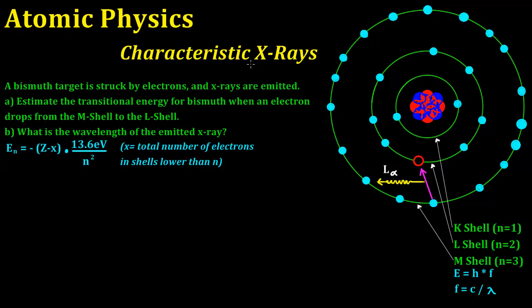Hi guys, today we're talking about atomic physics and characteristic x-rays. In this problem, a bismuth target is struck by electrons and x-rays are emitted. We need to estimate the transitional energy for bismuth when an electron drops from the M shell to the L shell, and find the wavelength of the emitted x-ray.